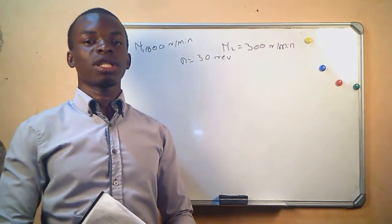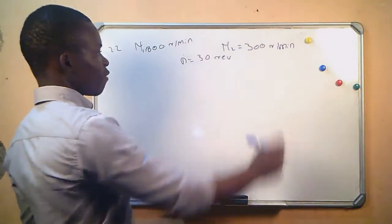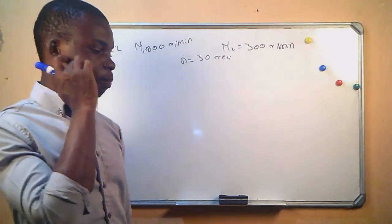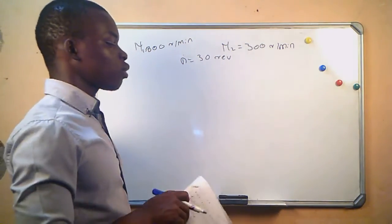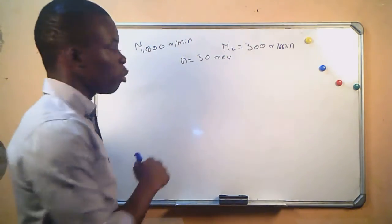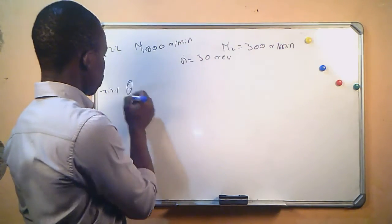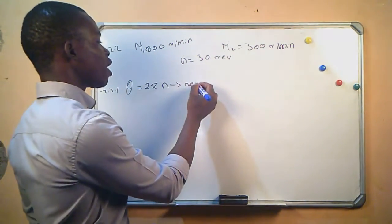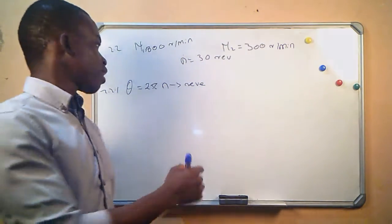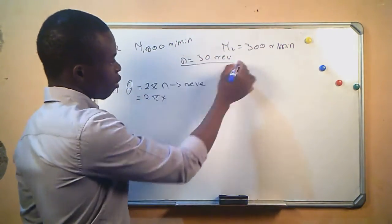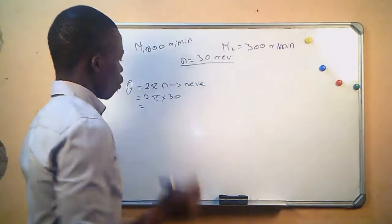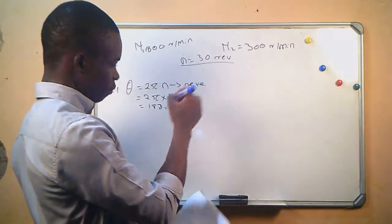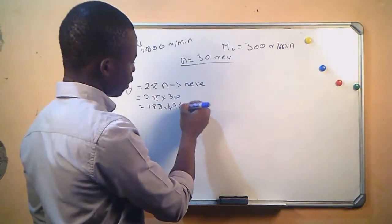We are given the initial and final rotational frequency of the machine, and the number of revolutions made by the spin dryer. For question 2.2.1, the angular displacement equals 2πn, where n is the number of revolutions made by the machine. So, 2π times 30 gives us an angular displacement of 188.496 radians.